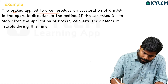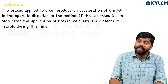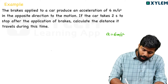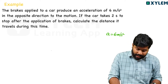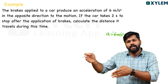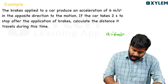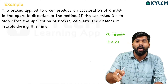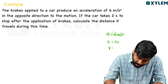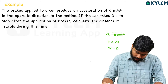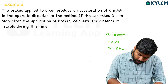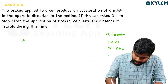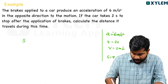Second type of question: The brakes applied to a car produce an acceleration of 6 m/s² in the opposite direction of motion — so it is a retardation, negative acceleration, a equals minus 6 m/s². If the car takes 2 seconds to stop, the final velocity v equals 0 m/s. Calculate the distance travelled during this time.